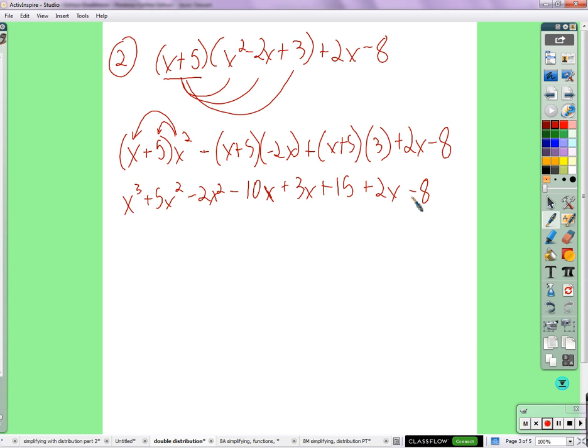Okay, so let's collect any like terms we see. Might be helpful to say there's an X to the third, and well, there's no other X to the third, so that's taken care of. Maybe circle the X squareds. There's two of those, so 3X squared. Maybe underline the X terms. Negative 10X plus 3X is negative 7X. Plus 2X is negative 5X. 15 minus 8, and that is 7.